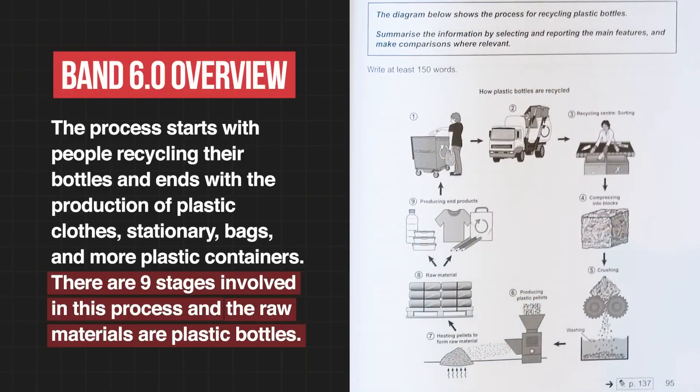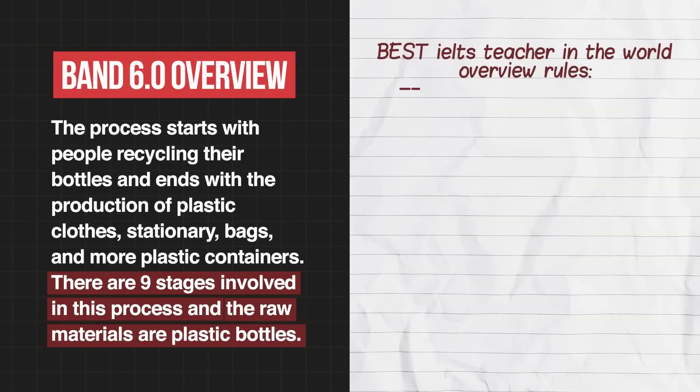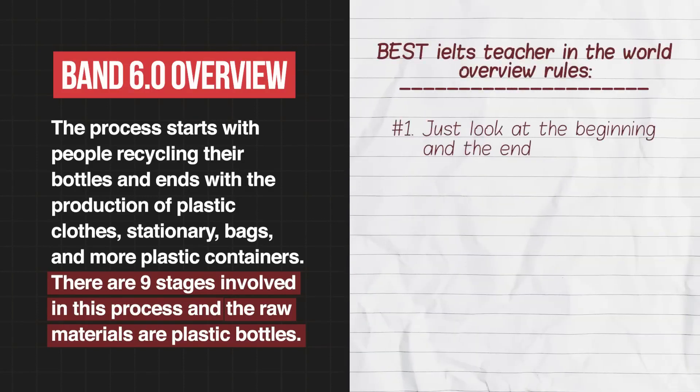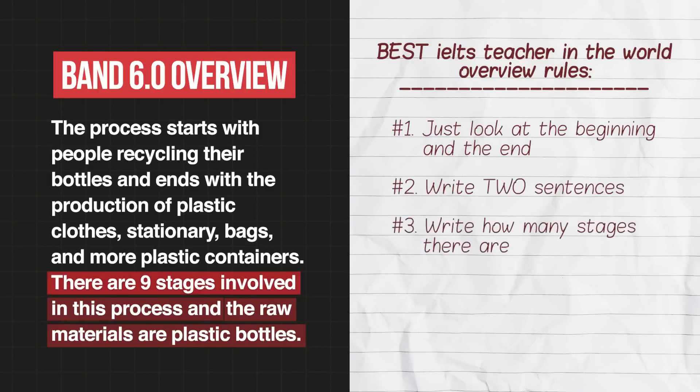Remember, the overview is just a summary of the most important information. In order to write a clear overview, you need to fully understand the diagram. When I spoke to this student, what they were told by their former teacher was: just look at the beginning and the end, write two sentences, write how many stages there are, and say what the raw materials are. This is the key problem — they were told to follow a rigid set of rules rather than just look at the diagram, understand it, and convey clearly what the most important parts were. Giving students a list of rules stops them from doing the most important thing, which is thinking for themselves.